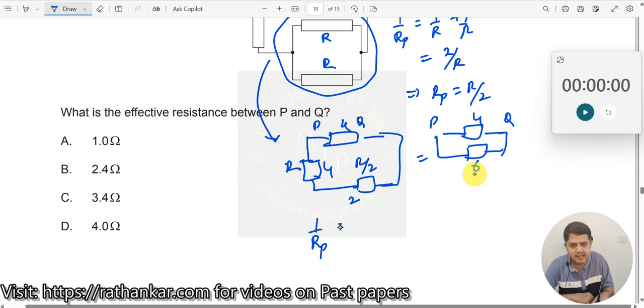So, 1 by Rp once again is equal to 1 by 4 plus 1 by 6. What is the LCM? 12 over here. 3 plus 2 which should be equal to 5 by 12. Rp should now be equal to 12 by 5.